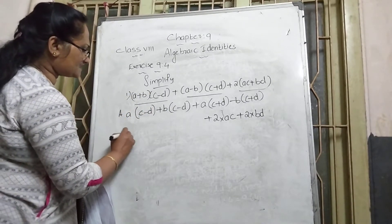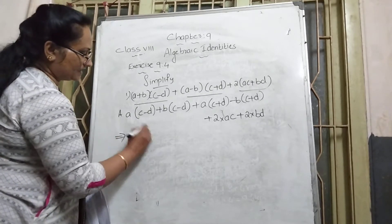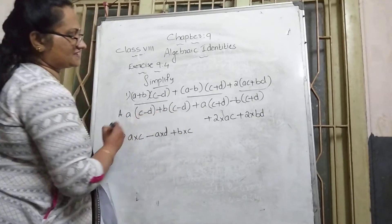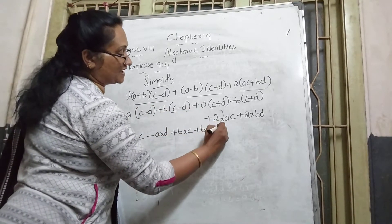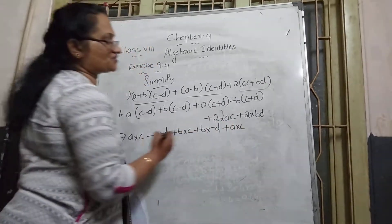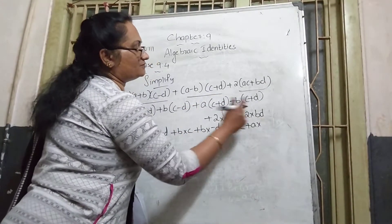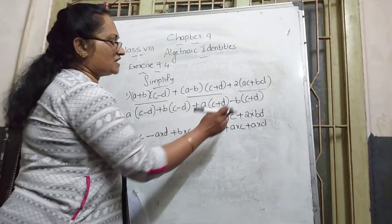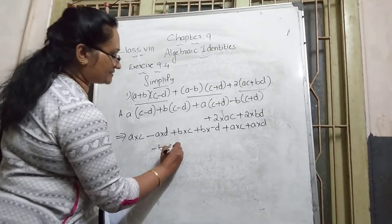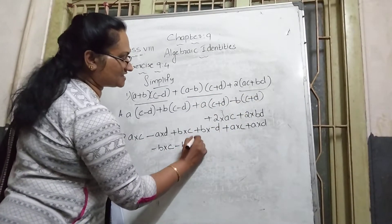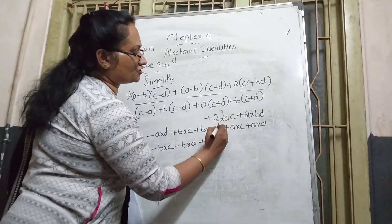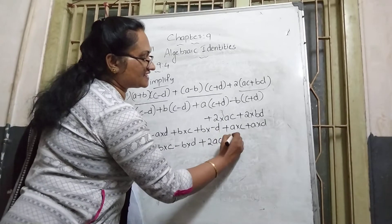This implies: a multiplied with c, then a multiplied with −d, then plus b multiplied with c, then plus b multiplied with −d (remember the sign). Then a multiplied with c again, plus a multiplied with +d, then minus b multiplied with c, and minus b multiplied with +d.